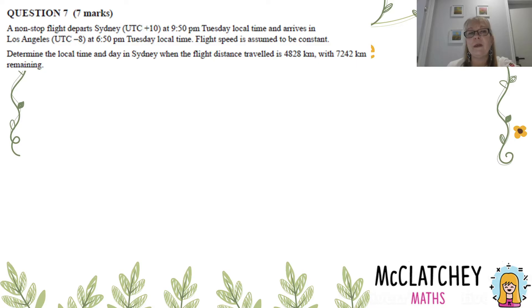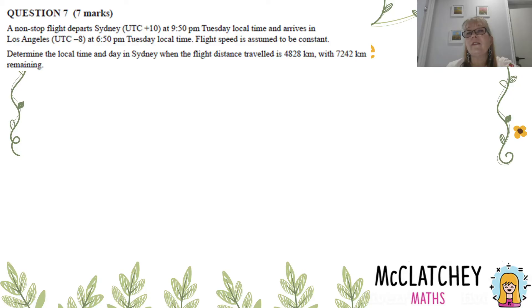Let's look at Question 7, worth 7 marks. A non-stop flight departs Sydney — UTC plus 10 — at 9:50 pm Tuesday local time, and arrives in Los Angeles — UTC minus 8 — at 6:50 pm Tuesday local time. Flight speed is assumed to be constant. Determine the local time and day in Sydney when the flight distance travelled is 4,828 kilometres with 7,248 kilometres remaining.